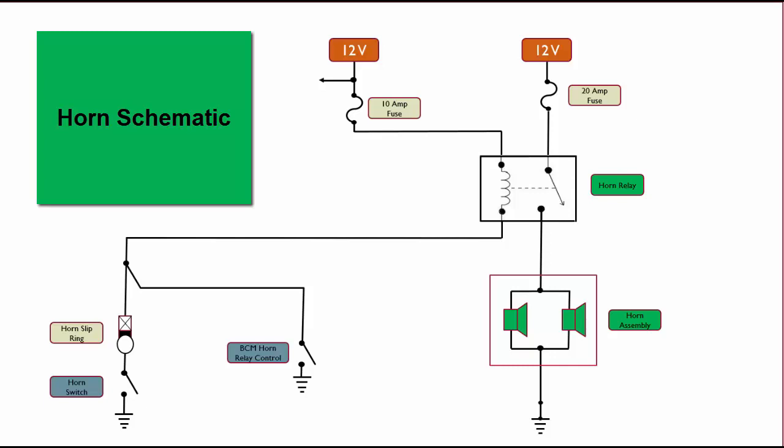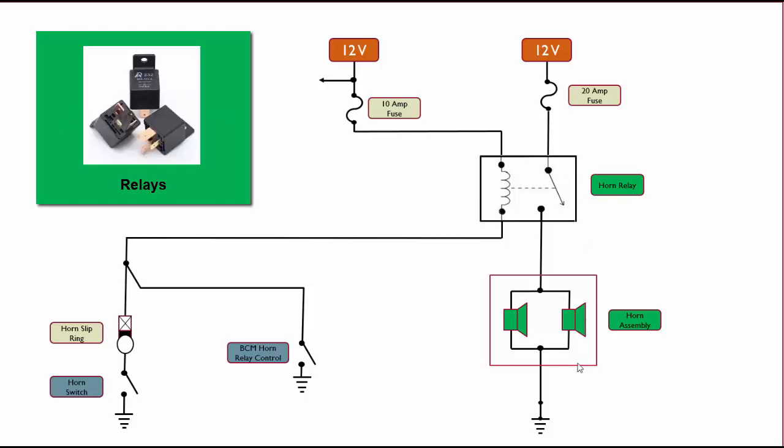This is a horn schematic from a General Motors vehicle, which uses a relay to control the horns. A relay is a device that allows a low current path in the circuit. This would be the low current path here, the relay coil. In this case, we have two different ways of turning it on.